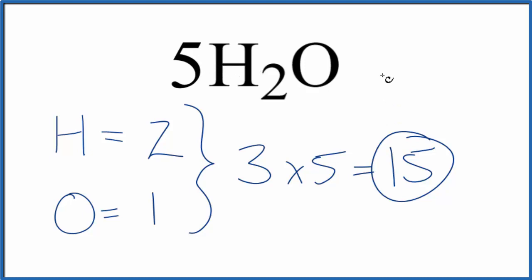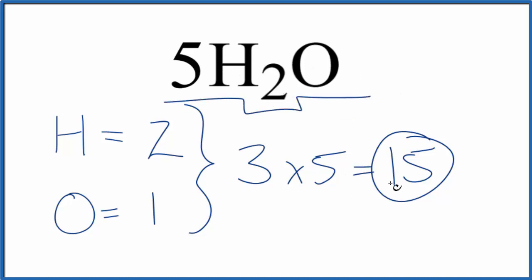This is Dr. B figuring out how many atoms are in 5H2O. Since it's five water molecules, we have 15 total atoms in 5H2O: 10 hydrogen atoms and 5 oxygen atoms. Thanks for watching.